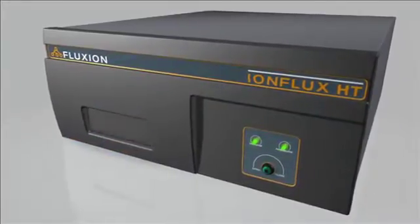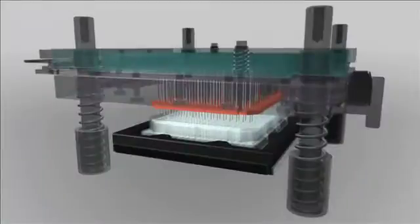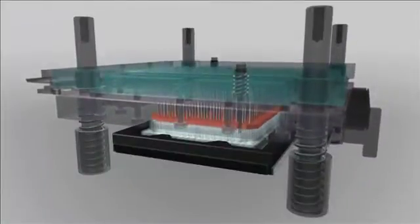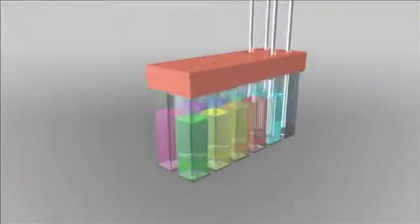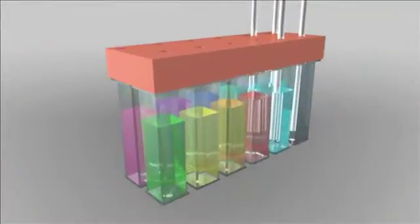Once inside the instrument, a pneumatic interface seals against the top of the plate which provides regulated air pressure and vacuum into the wells. The interface also contains an array of electrodes which dip into specific wells on the plate involved with the recording.